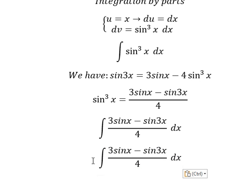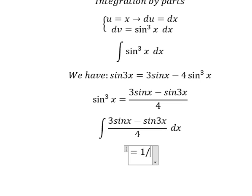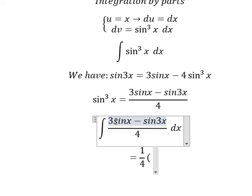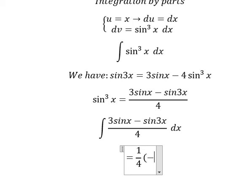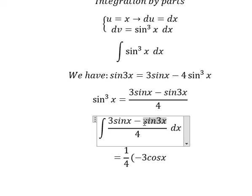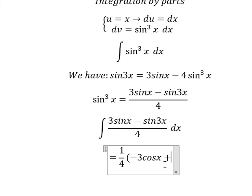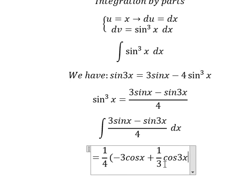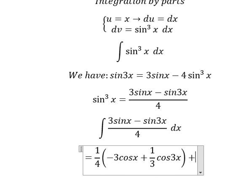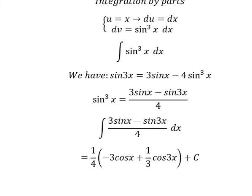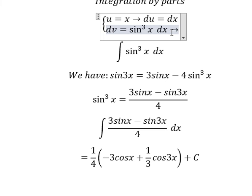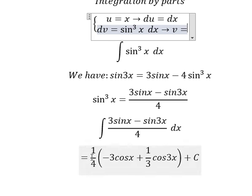And now we have the final answer. The integration of 3 sin x we have negative 3 cos x. The integration of sin 3x we have 1 over 3 cos 3x, and I will put the constant C. And now the integration of this one, we have v equals to this one.